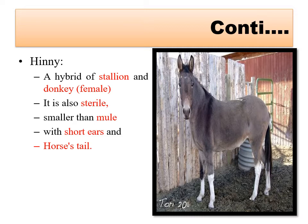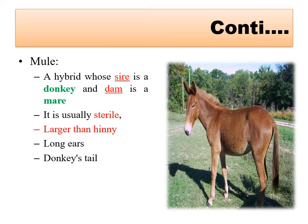Mule and hinnie are the result of crossbreeding between horse and donkey. A hinnie is a hybrid of a stallion and a female donkey - breeding between a male horse and female donkey. A mule is a hybrid whose sire is a donkey and whose dam is a mare - male donkey crossed with female horse. In veterinary science, the father is called the sire and the mother is called the dam.